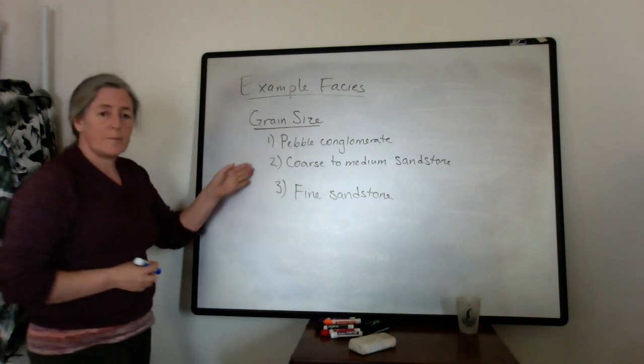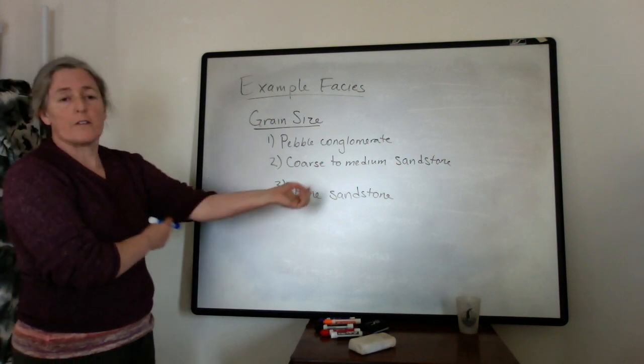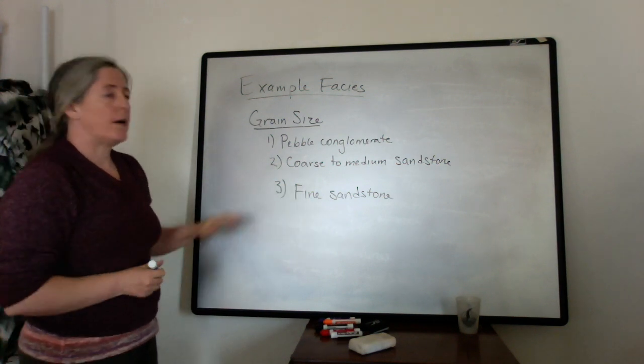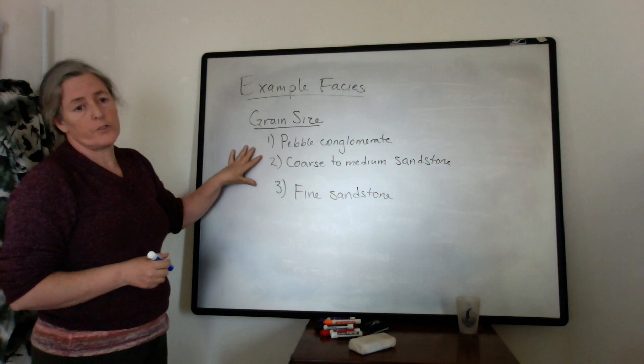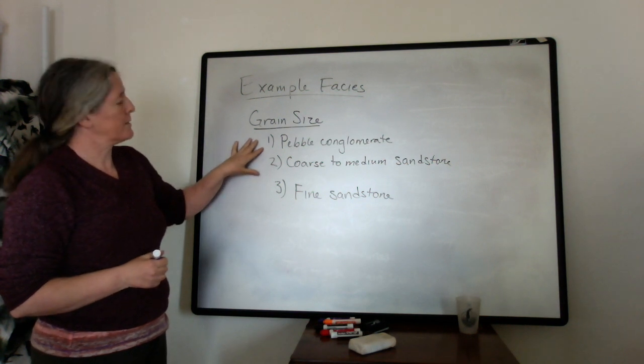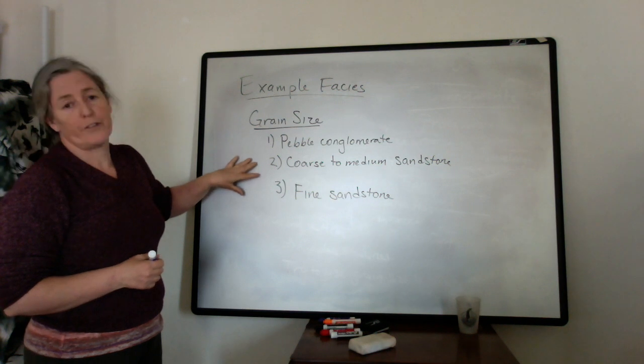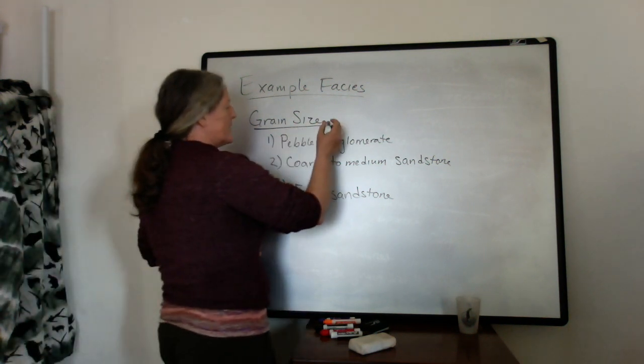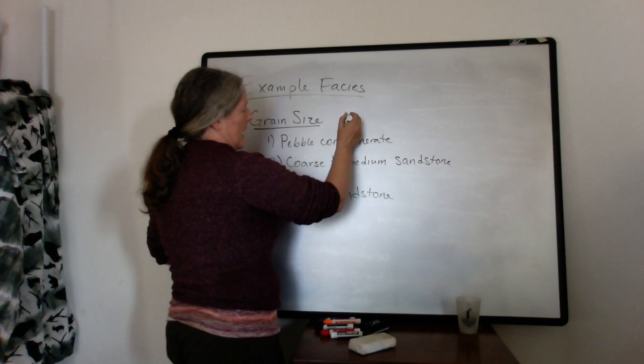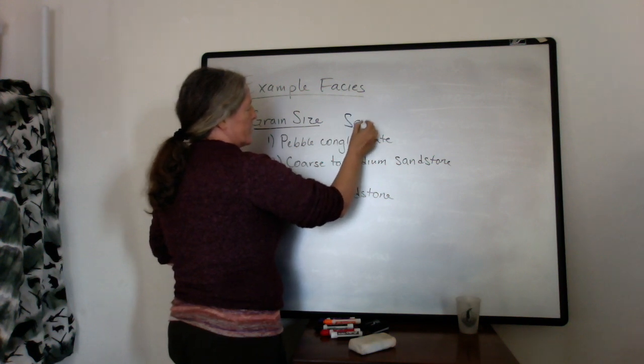So I described this in terms of the grain size for the river, but I could also do it by sedimentary structure because the sedimentary structure actually changes with the flow speed as well. I could do grain size and then I could add the sedimentary structures.